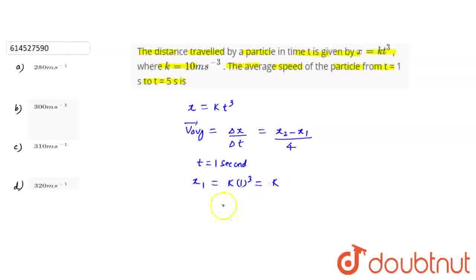In a similar manner, corresponding to t equals 5 seconds, if we calculate x2, then what will x2 be? k into 5 cube, this can be written as 125k, right?